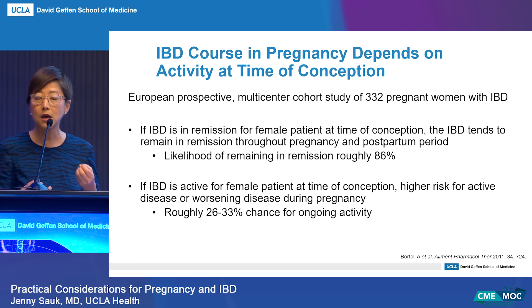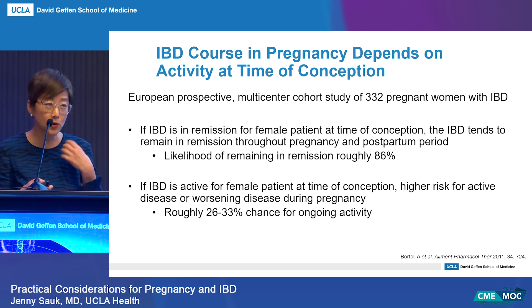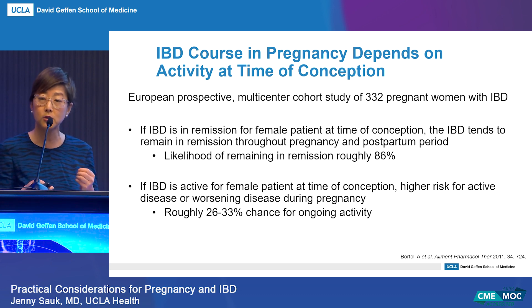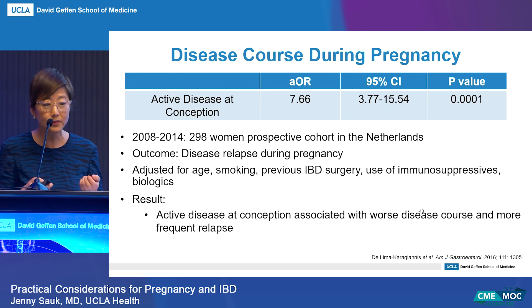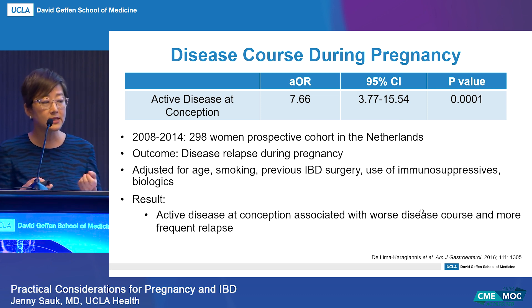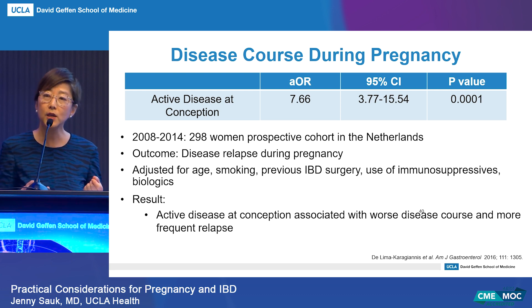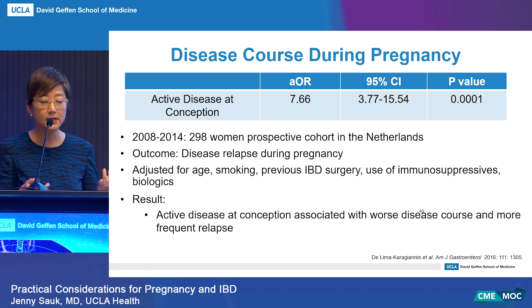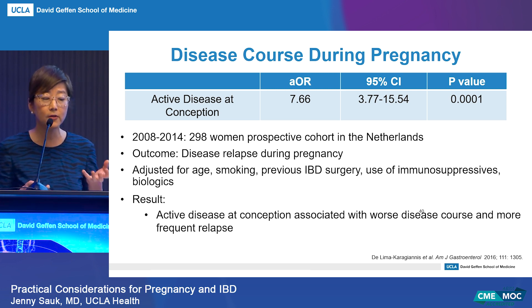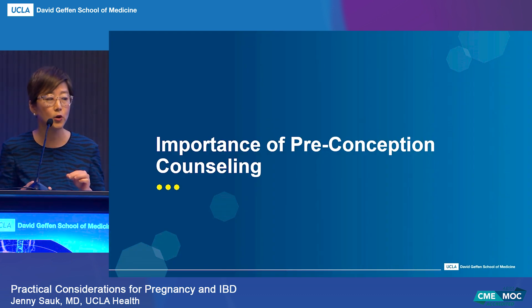These are things I usually like to tell my patients early on so they understand the importance of being in remission at the time of conception for good pregnancy outcomes. This was also seen in another study from the Netherlands — 298 women, prospective cohort — looking at disease relapse during pregnancy. The adjusted odds ratio of having disease relapse with active disease at conception is seven-fold higher risk. So it's really important to try to get that disease activity under control early.